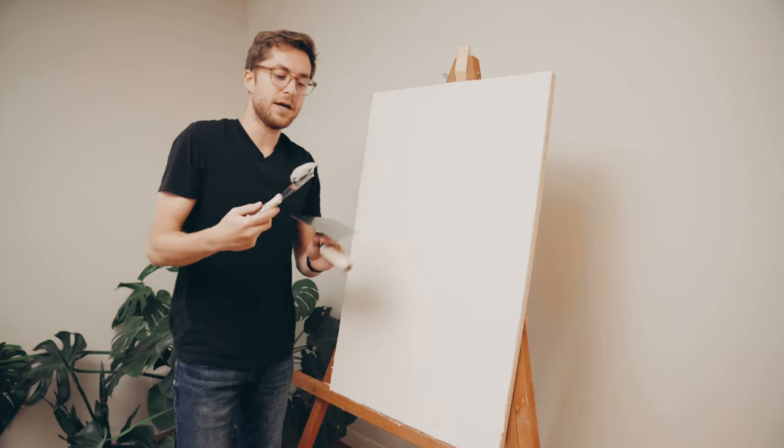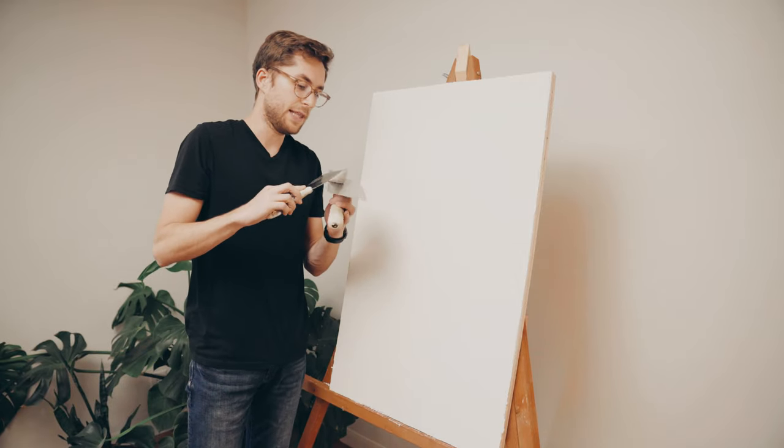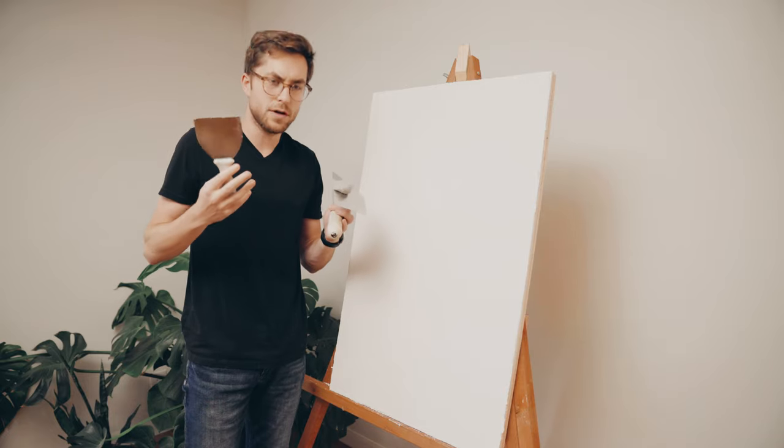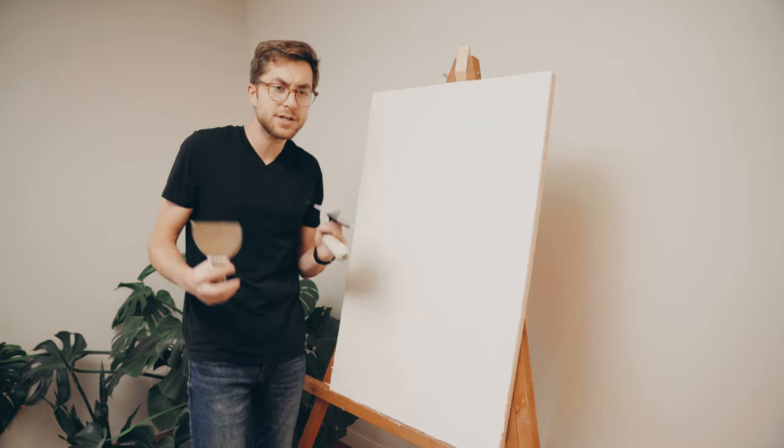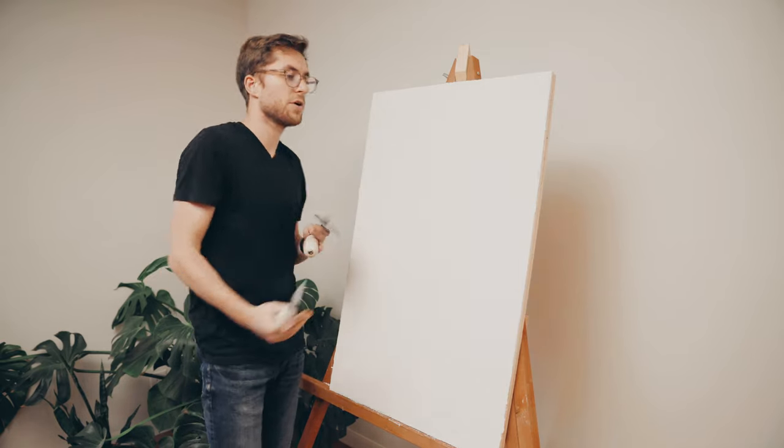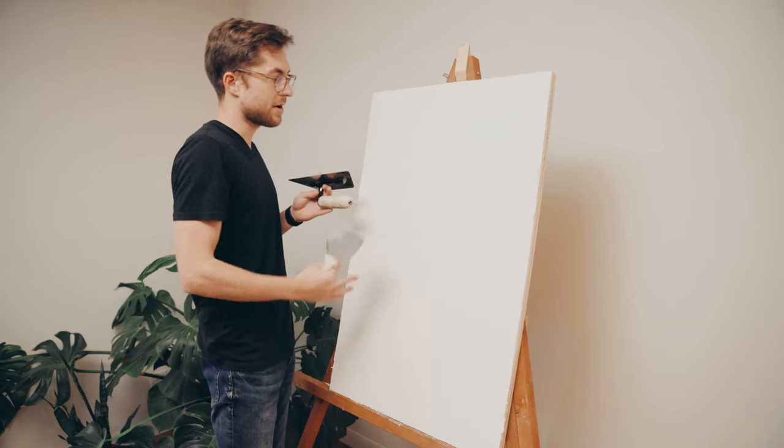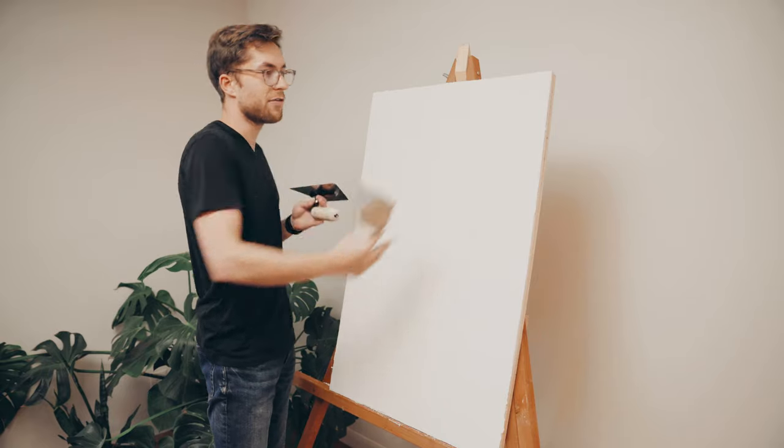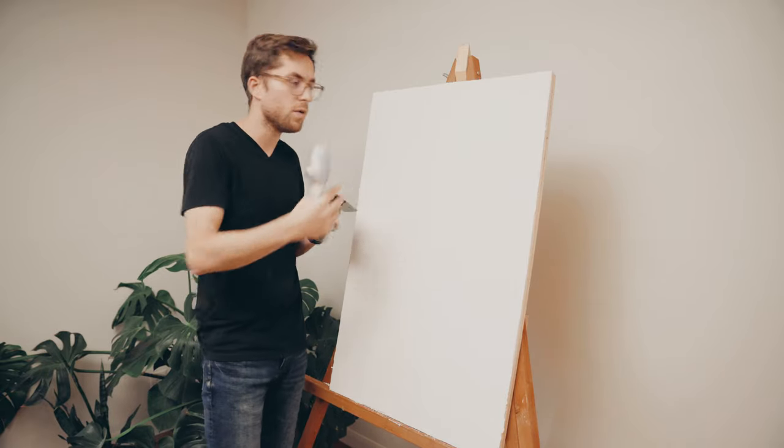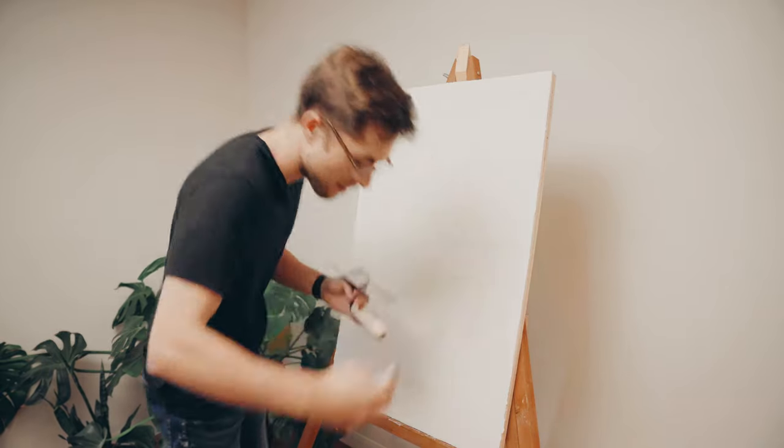We're going to be applying this gray Venetian plaster today. Like I said, we're going for a textured look here. The first coat I'm putting on is going to be more of a skip trowel look where you're not covering the whole board or wall with plaster.